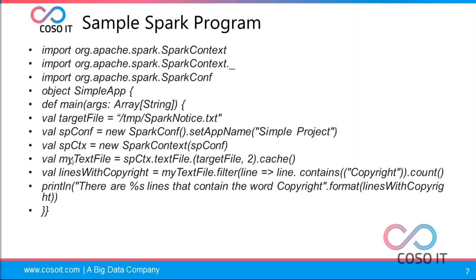I'm importing SparkContext and all the libraries under spark.text and SparkConf here. I'm using SparkConf for initializing the configuration parameters. This is my target file. I'm initializing my configuration with a new SparkConf and setting up my application name as 'simple project'. I'm running that program on top of YARN.